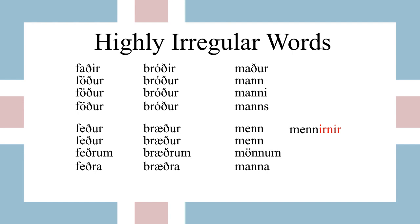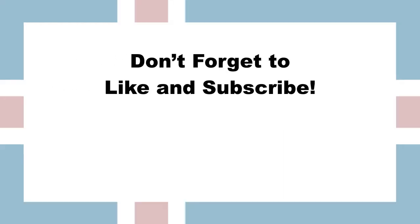Remember that there are a lot of irregular nouns out there. The best way to know for sure what form you need is to visit the BÍN website, which will show you all the different forms for any noun you type in. Hopefully this video will help you grasp some of the patterns in these words. Please don't forget to like and subscribe and leave any comments or questions below and I'll try to get to them.